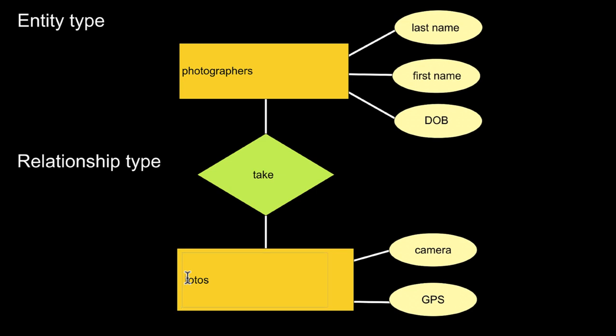Then there are photos — that's another entity type. For each photo, we denote attributes like what camera was used to take the photo, or the GPS location where the photo was taken. And then there's the relationship type. On the principle level, photographers take photos — that's a principled relationship.